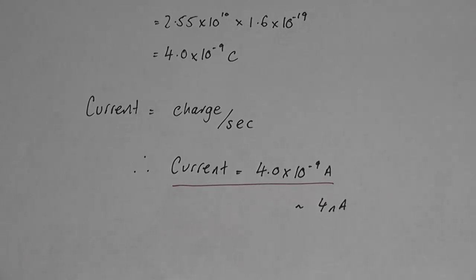I also know that current is charge per second flowing past the point. So the current is 4.0 times 10 to the minus 9 amps, which is 4 nano amps.